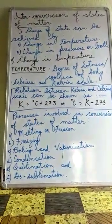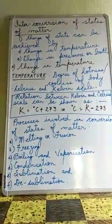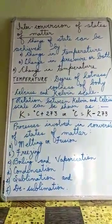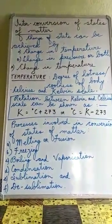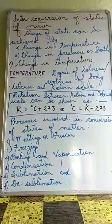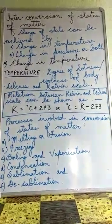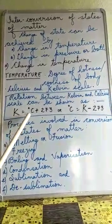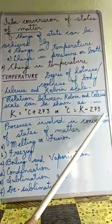Temperature is the degree of hotness and coolness of a body. There are three scales to measure temperature. Celsius and Kelvin scales are the most common. Thermometers we use at home are based on the Celsius scale, also known as the centigrade scale, while those used in the laboratory measure temperature on the Kelvin scale. The relation between Kelvin and Celsius scale is: K = °C + 273, or °C = K − 273.